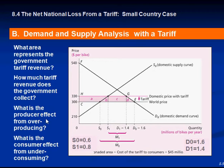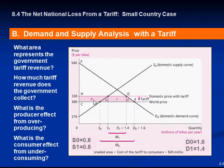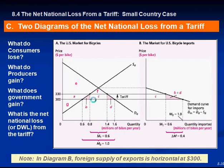What is the producer effect from over-producing? As a result of the tariff, producers expanded output, so there is a deadweight loss shown as area B. And the consumer effect of under-consuming is shown as area D. So as the tariff goes up we have two deadweight losses: B and D. The government's tax revenue is C, area A is what the producers gain, and the total consumer surplus lost is also accounted for.